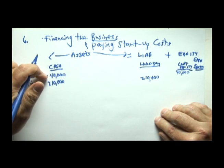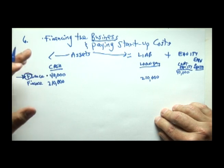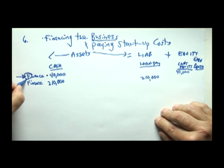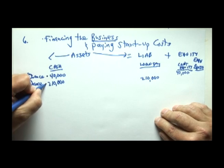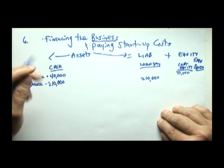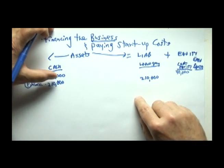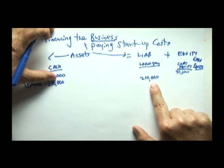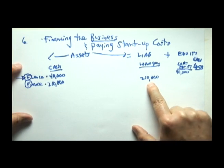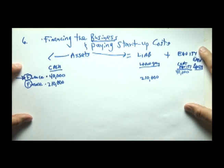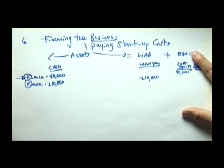If $40,000 isn't enough for the business to afford all of its startup costs, it must get additional financing from the bank. So we got $40,000 from the owner's contributed equity and $210,000 from the bank loan. Now the business can begin investing in long-term startup costs.